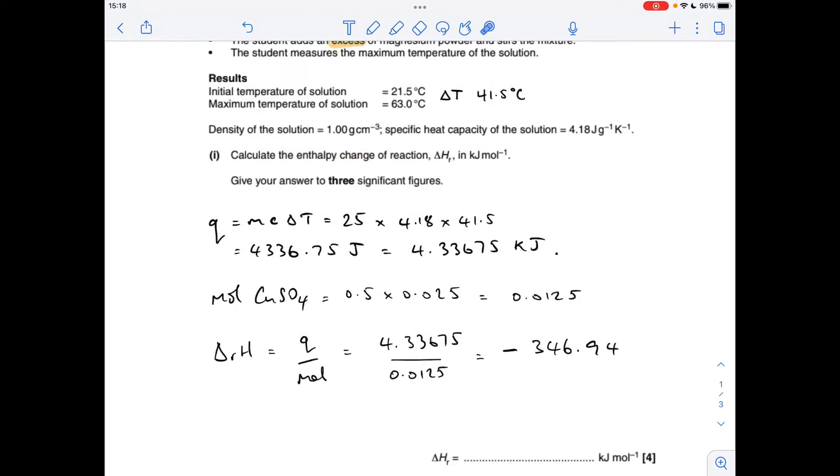So the final thing we do is work out the enthalpy change by dividing the kilojoules by the moles. So we'll just plug our numbers in and we get an answer of minus, it's exothermic. Remember the solution got hot there. 346.94 is the calculator value, but we'll have to give it to three significant figures. So it's minus 347 kilojoules per mole.